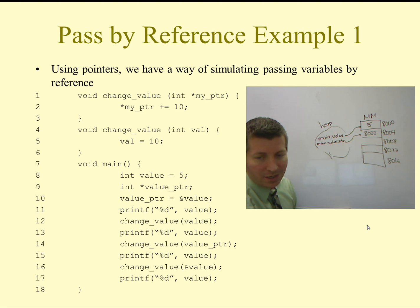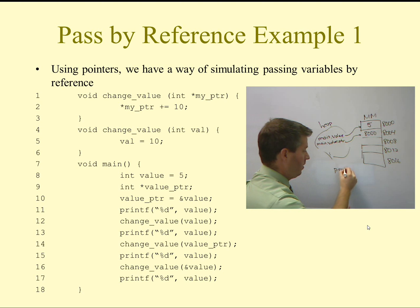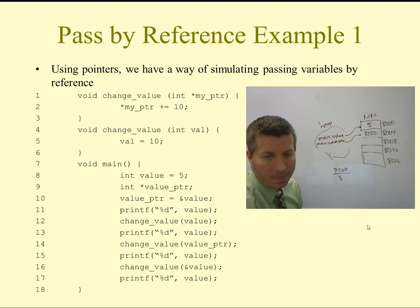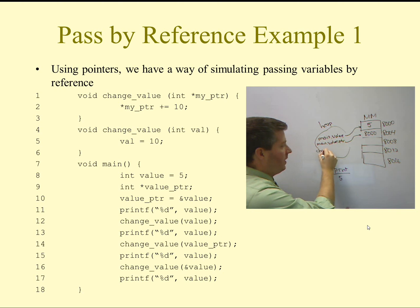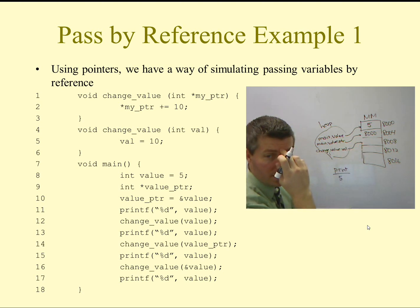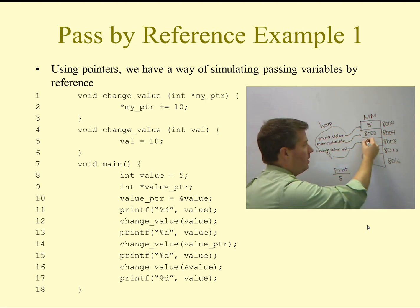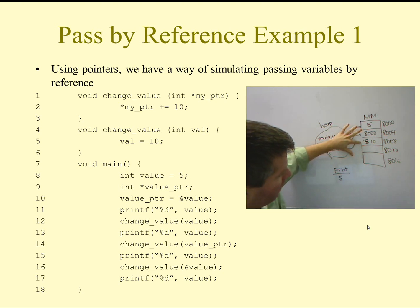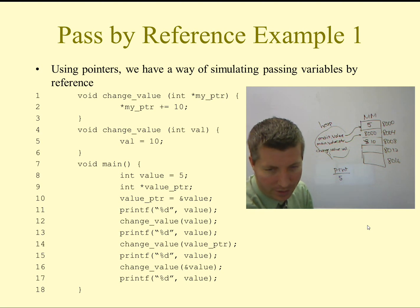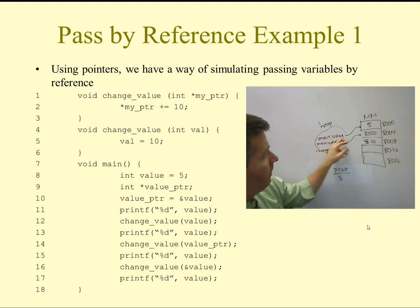On line 11, I print out value — this prints 5. On line 12, I call the change_value function and pass in value. This is just passing an integer, not an address, so it calls the function on line 4. Inside that function, I get a variable called val pointing to its own location with the value 5 passed in. On line 5 it changes that value to 10. When I exit from that function, I lose my reference to that location of memory. On line 13, I print out the value variable in my main function, which is still 5.